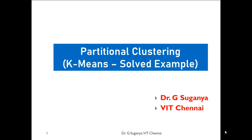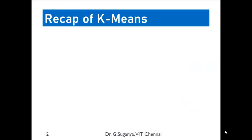Hi learners, we are going to see k-means — a solved example — in this session. Just a recap of what k-means refers to: it's an unsupervised clustering algorithm in the sense that given a dataset without any output attribute, the only possibility is grouping, otherwise called clustering. It is a very simple and effective clustering mechanism which works on the principle of means, identifying the means of the cluster.